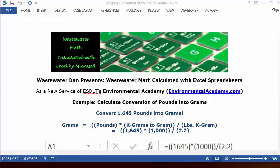Today's example: calculate the conversion of pounds into grams. Today's problem reads, convert 1,645 pounds into grams.